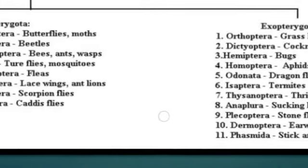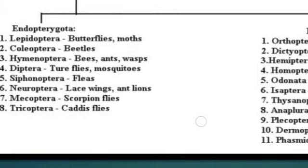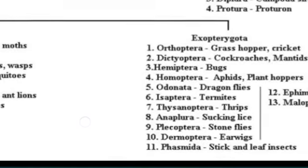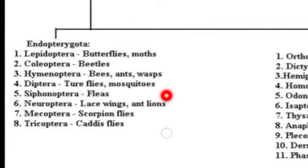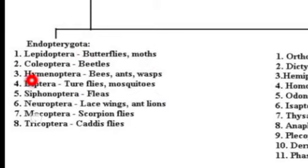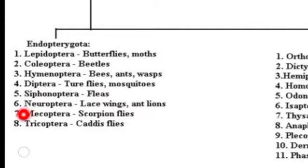There are actually 21 orders included in Pterygota. When we talk about Endopterygota, the Lepidoptera order comes under it, which has butterflies and moths. Coleoptera comes under Endopterygota, which has beetles. Hymenoptera is there, which includes bees, ants, and wasps. Diptera is there, which includes mosquitoes and horseflies. Siphonaptera is there, which includes fleas. Neuroptera has lacewings and antlions. Mecoptera has scorpion flies. Trichoptera includes caddisflies.